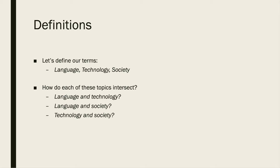I want you to begin by thinking about some of the definitions of the major terms we'll be using in this course. We need to define the terms language, technology, and society, and then think about how these various topics will intersect with each other. How do language and technology intersect? What is the role that language plays in society? And how does technology affect society? I want you to pause the video now and write out your own definitions of language, technology, and society — a sentence or two for each.